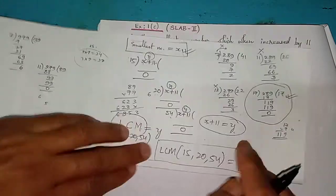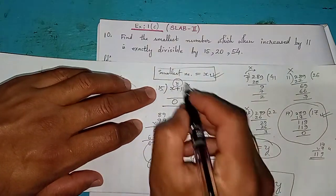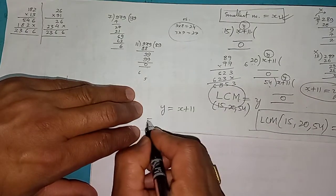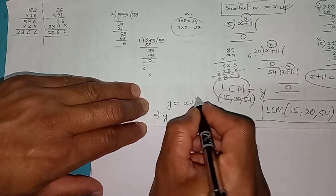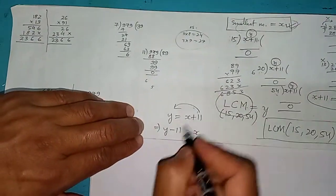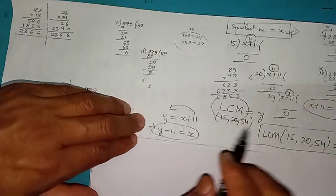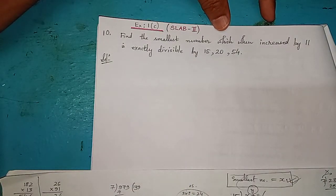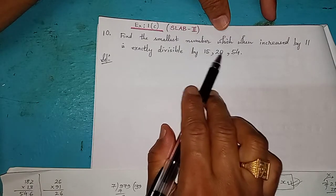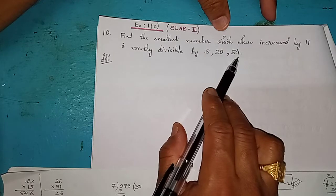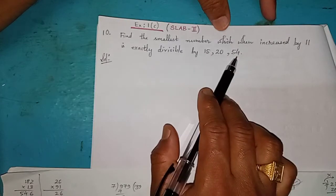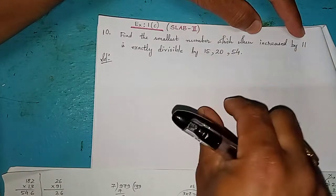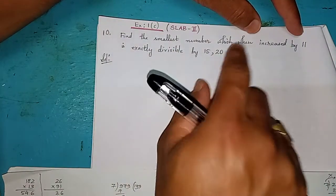So the LCM is completely divisible by all three. We found y, but y means x plus 11. So to find the smallest number x, from the LCM we subtract 11 to get x. The working plan has just two steps: first, find the LCM of 15, 20, and 54; second, subtract 11 from that LCM value to get the required smallest number.